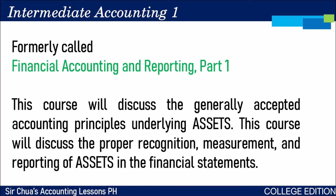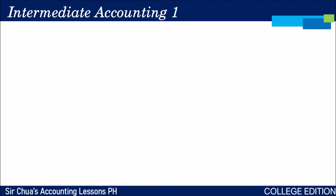This course will discuss the proper recognition, measurement, and reporting of assets in the financial statements. In senior high school or in your basic accounting subjects, you talked about the financial statements as a whole — how to prepare these financial statements in their totality. Now here in Intermediate Accounting 1, we will just be focusing on assets and talking about them one by one, line item by line item. To give you a historical background, let me show you the comparison of the previous CPA board exam curriculum and the new one.